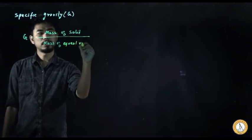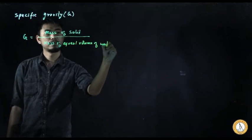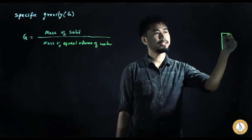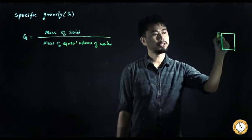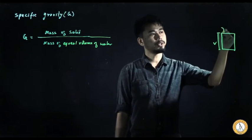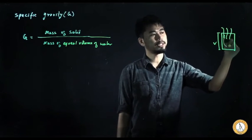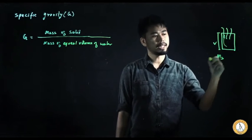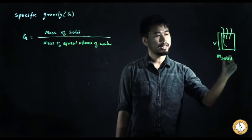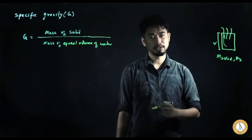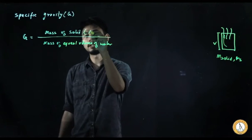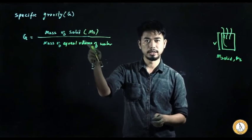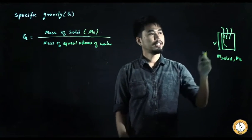For example, consider a container with volume V. If I fill this container with solid, whatever mass I get is the mass of the solid — let's write it as Ms. Many students get confused here with 's' standing for solid, not soil.